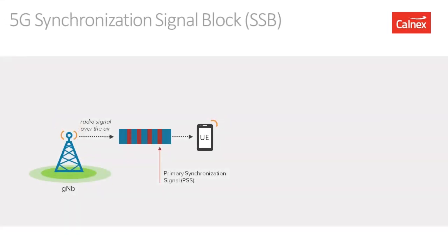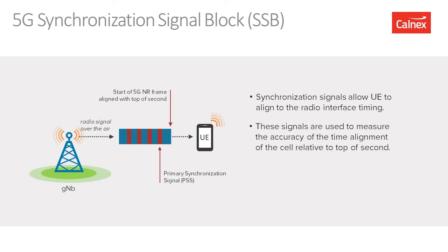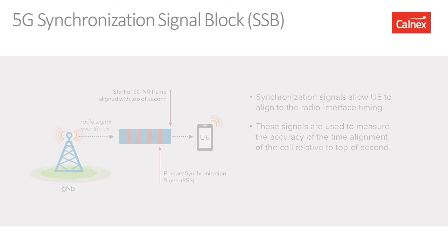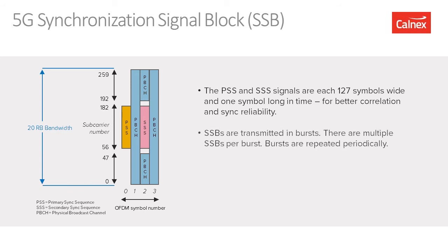Now that we've discussed why synchronization measurement is important, what exactly do we measure? The good thing about 5G is that it has a synchronization signal block (SSB) within the transmission. The SSB carries synchronization from the gNodeB to the user equipment. We can use this signal to measure the accuracy of time from the base station. The PSS and SSS signals are 127 symbols wide — wider than 4G to provide better correlation and reliability. These signals are transmitted in bursts with multiple SSBs per burst and also carry the physical cell ID, so when you measure them you know which cell you're measuring.